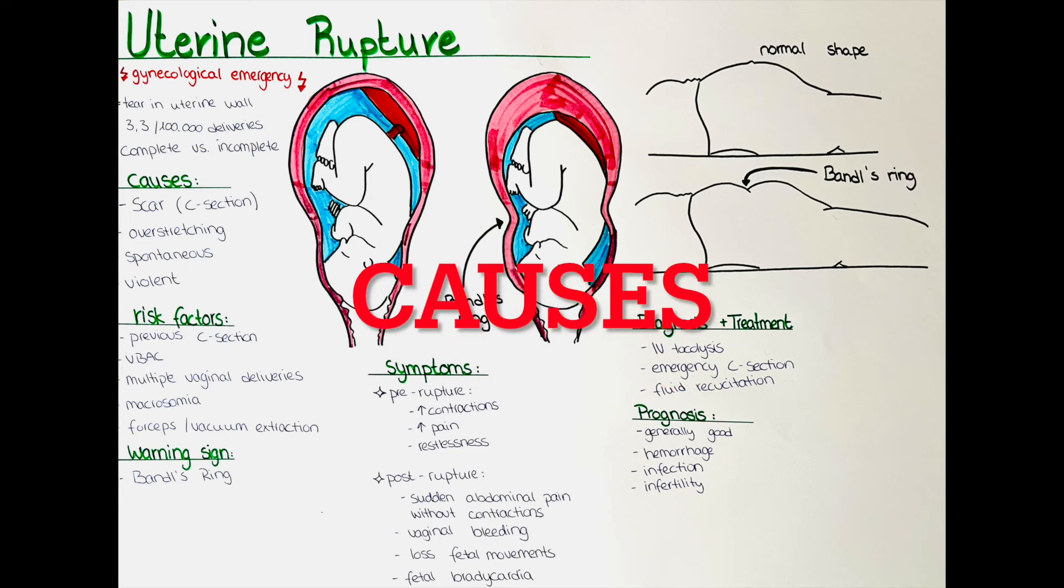What are causes of uterine rupture? A uterine rupture can occur due to a scar. This is the most common type of uterine rupture. It is most likely to occur in women who have had a previous c-section.